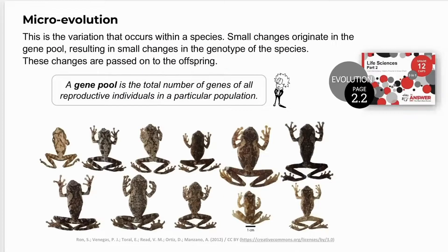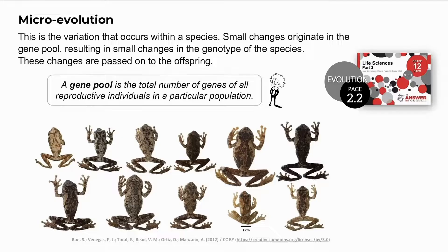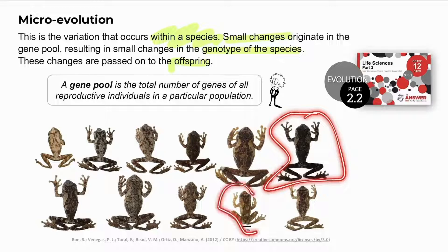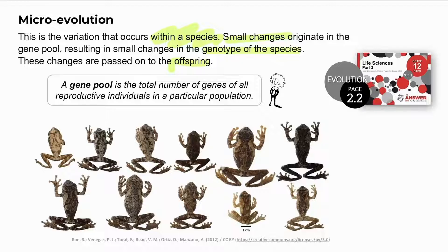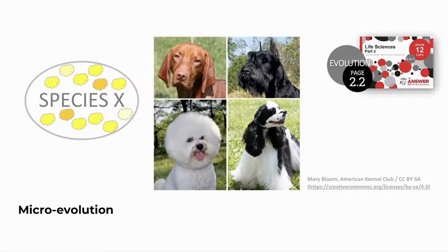In contrast, microevolution is change or variation that occurs within a species. There are smaller changes that occur in the genotypes of the species, and these changes are passed on to offspring. In the example of Buckley's tree frogs, we see variation within a species — a particular colour, size, pattern, or function may give the individual an advantage for survival. The favourable gene is passed on to offspring and will always increase in frequency in a population. Microevolution always shows variation within a species.